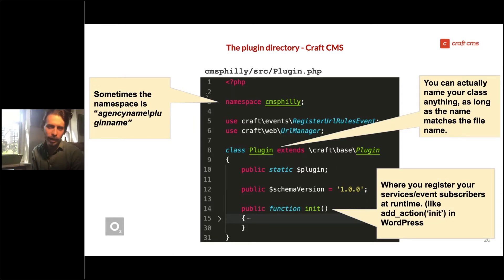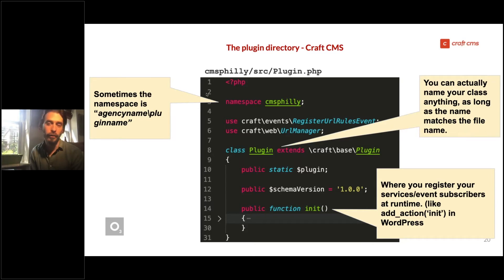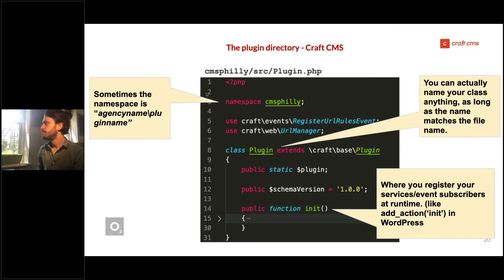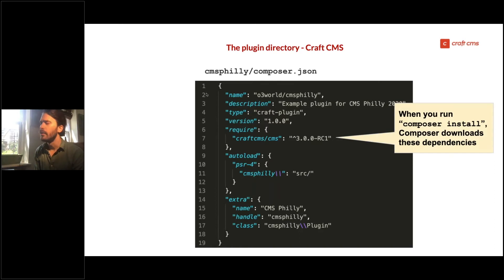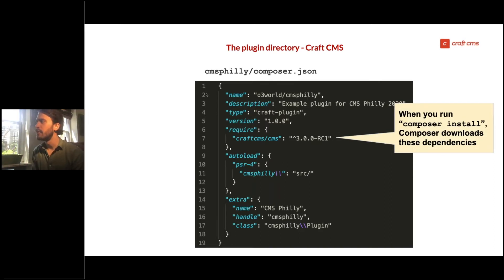The public init function or method is where you write events at run time. It's much like, for those familiar with WordPress, the add_action on init hook that you would use.